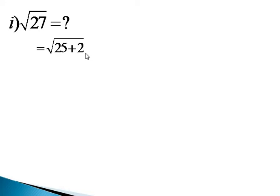So why we will write down 25? That is the nearest perfect square number. That square root we can find easily.